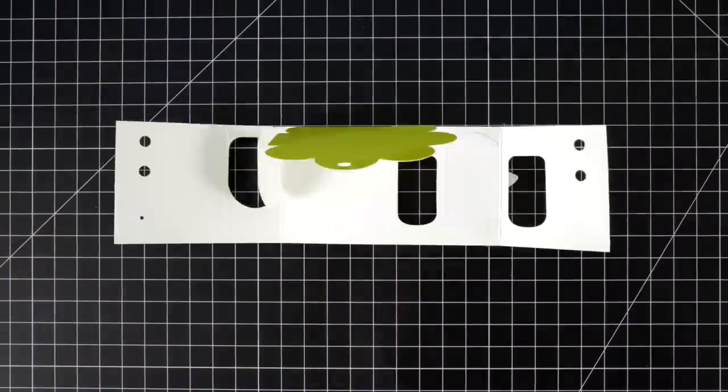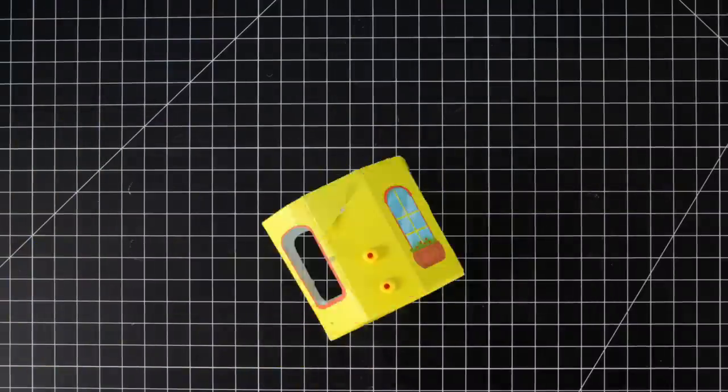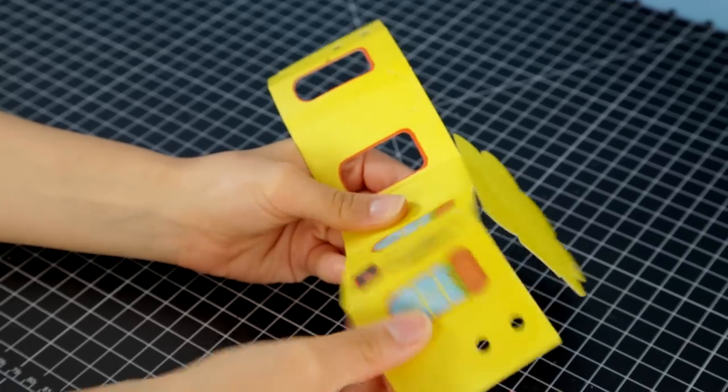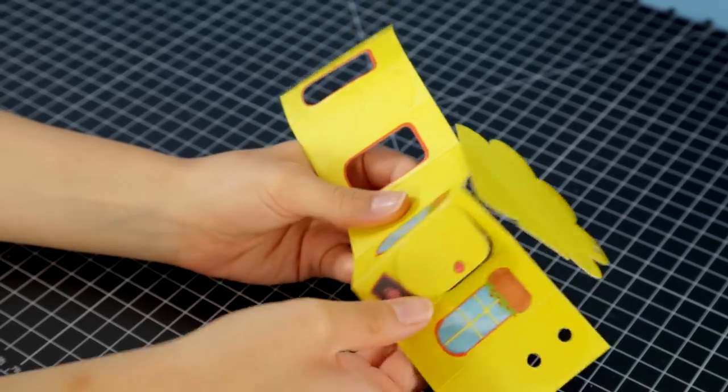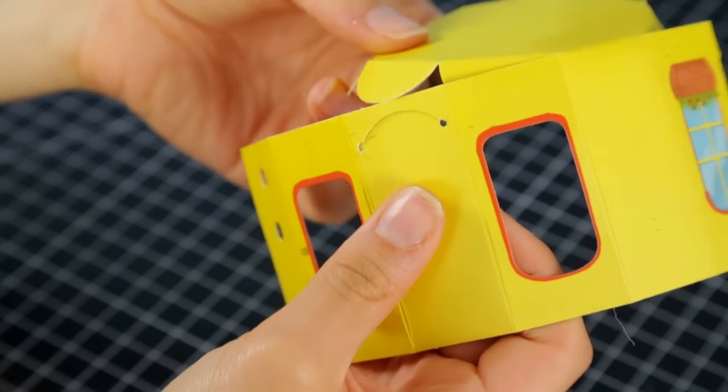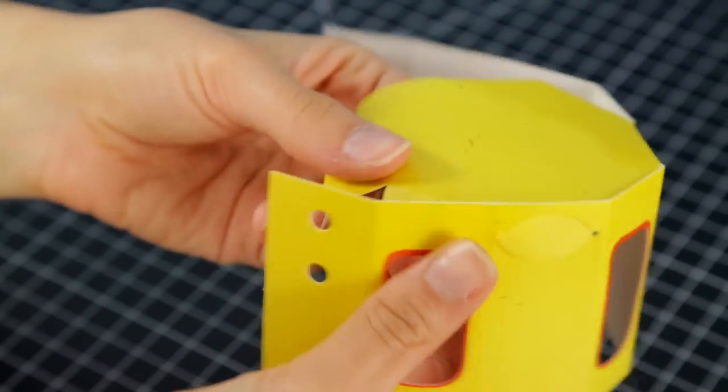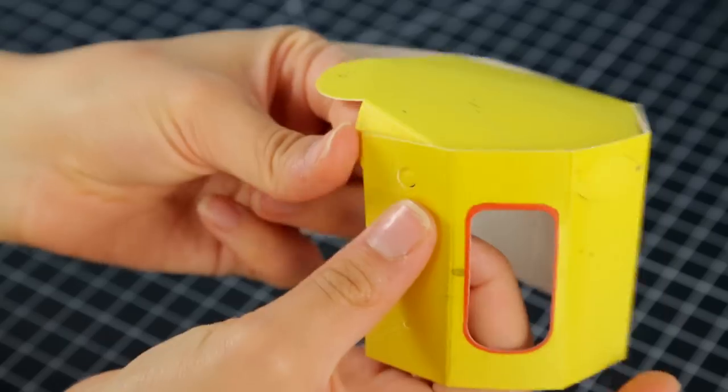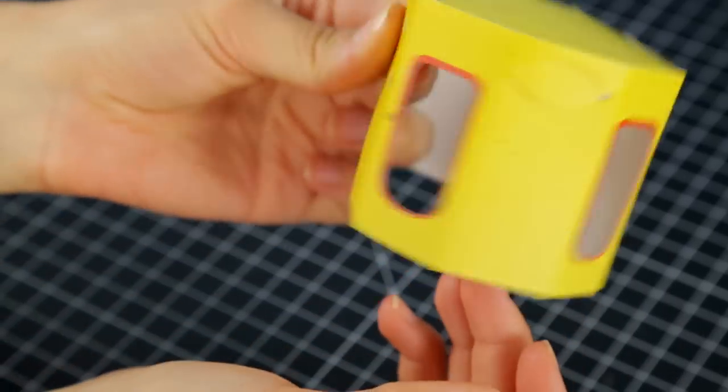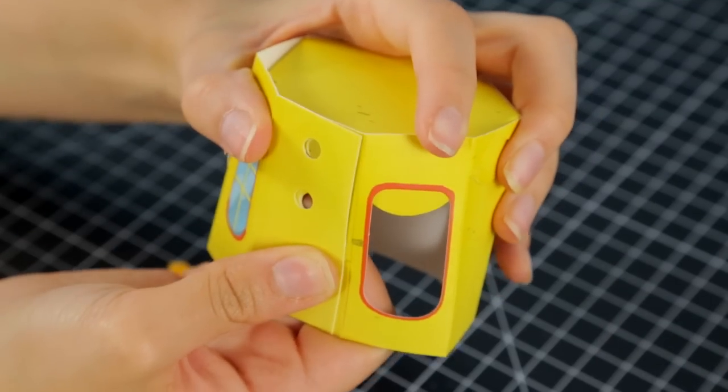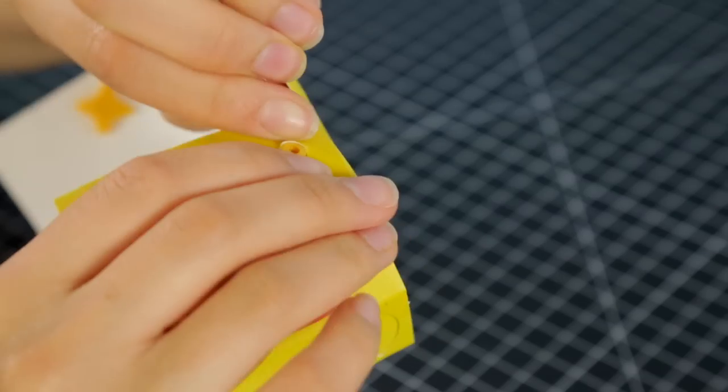Step 3. Time to build a cat hideout. Fold along the creases to make it easier to put together. Now line up the holes on the side and hold it in place with star stoppers.